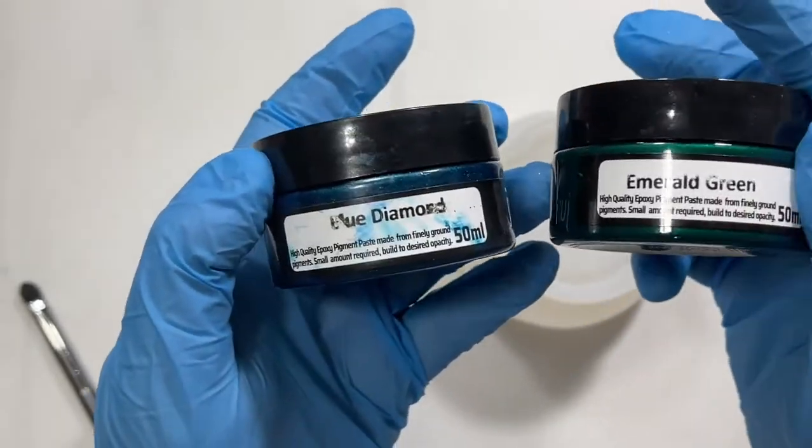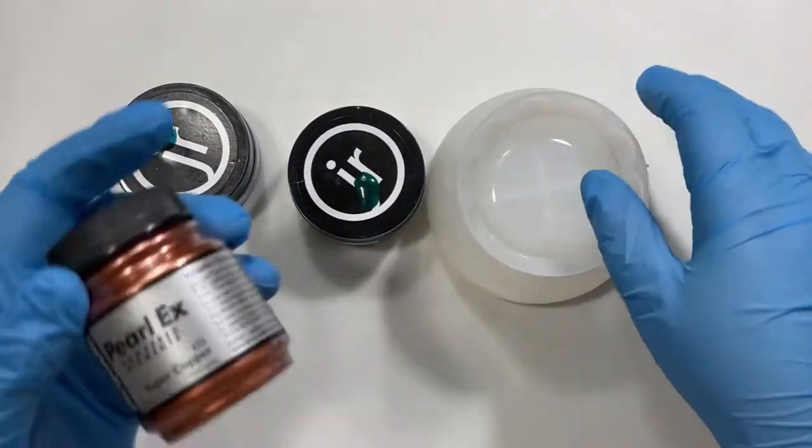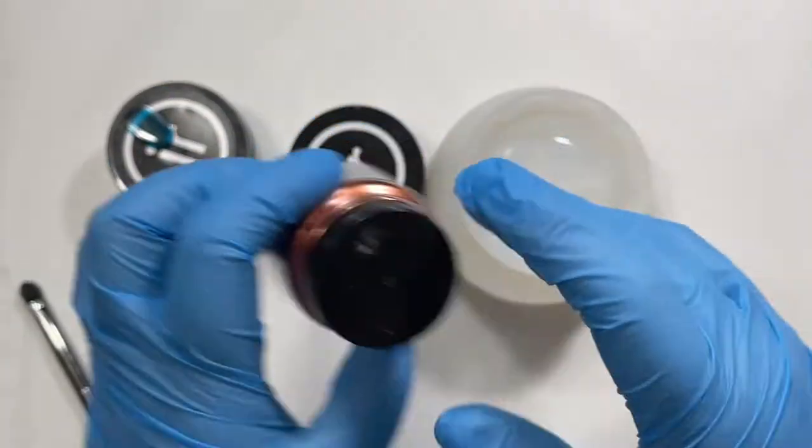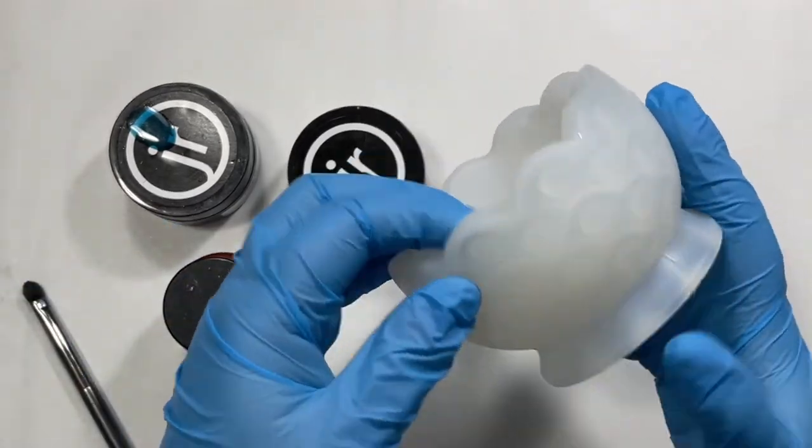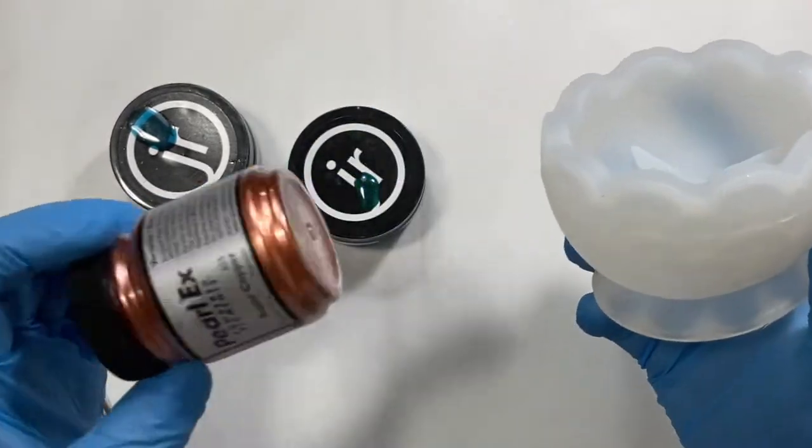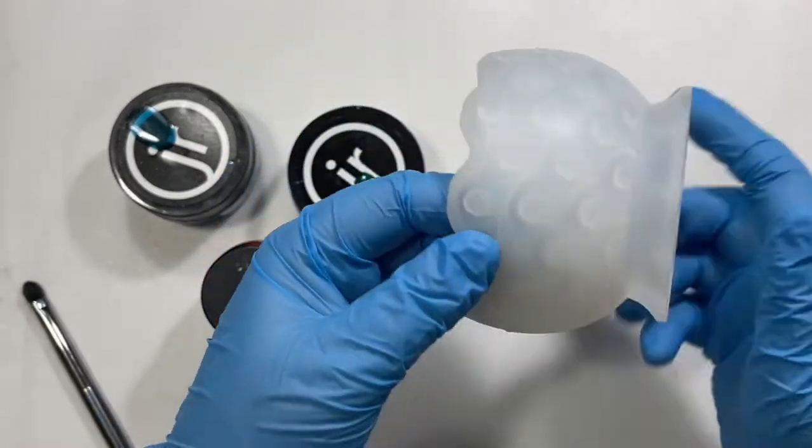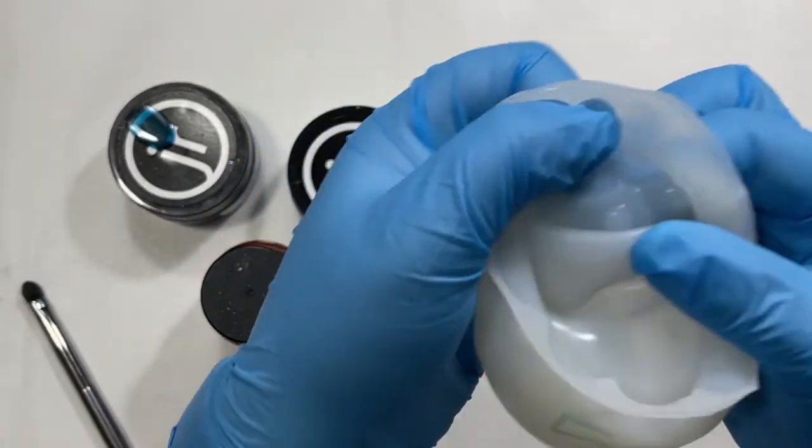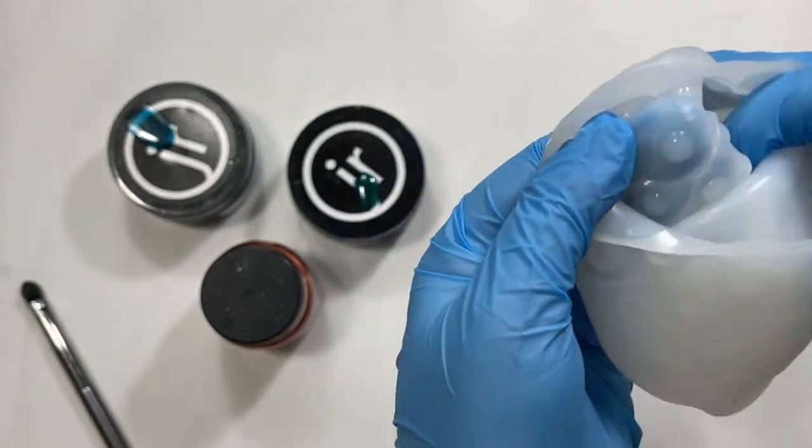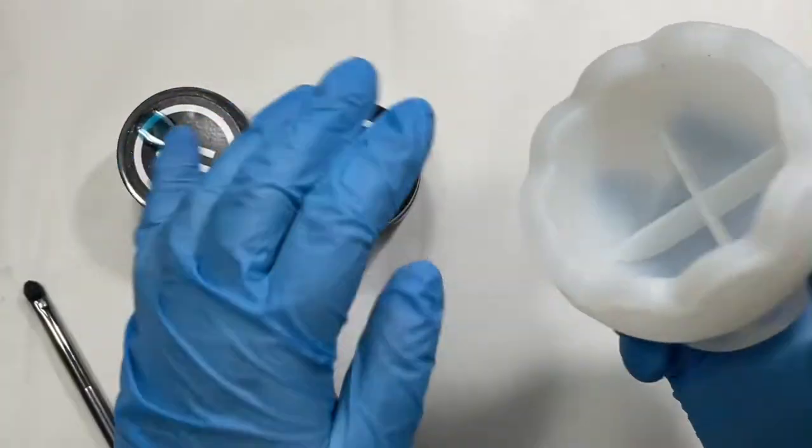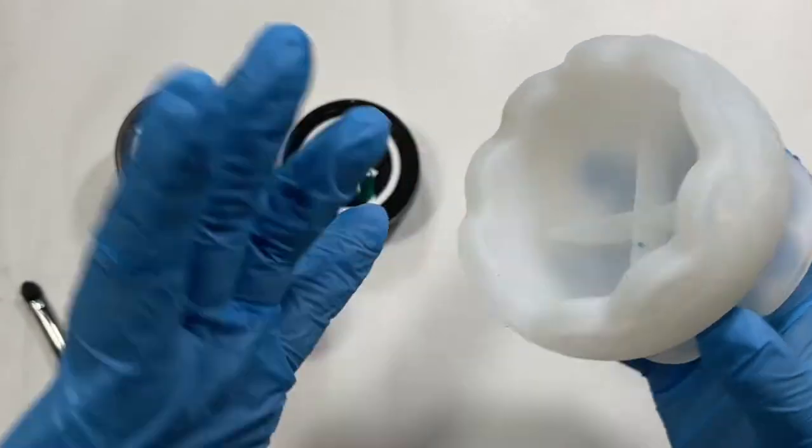Then I have copper pearl X mica powder in super copper. My plan is to use the mica paint around the edge and hit these little round dots with the copper, then pour the color in. I hope this turns out looking like peacock feathers.